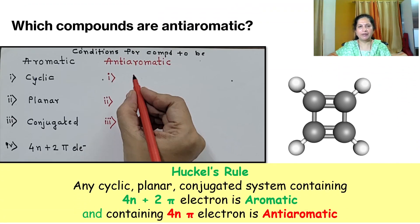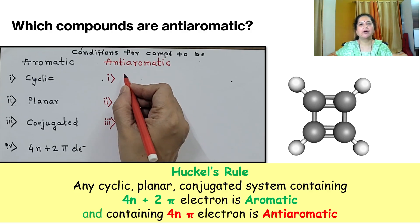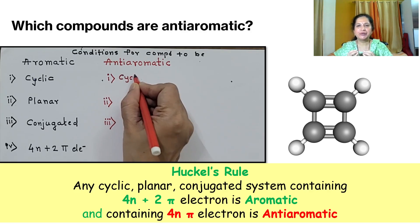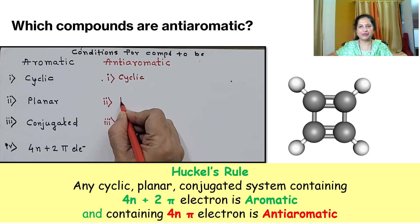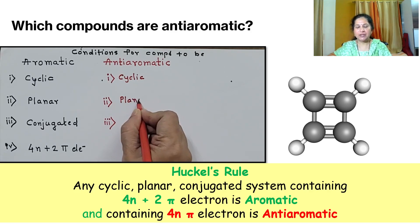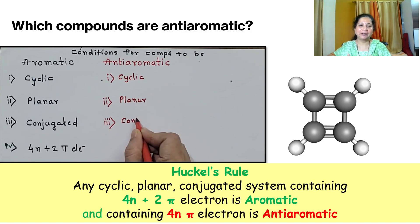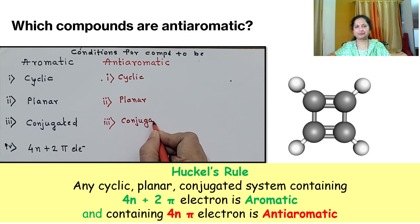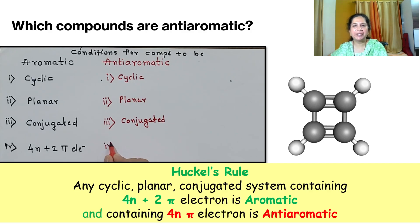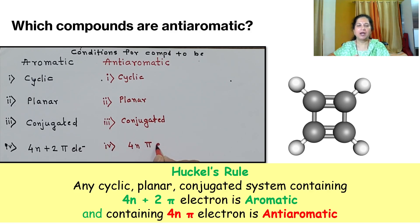Now let's check when to call a particular compound as anti-aromatic. Remember, for any compound to be aromatic or anti-aromatic, it should satisfy the first three conditions. Now, if such a cyclic planar conjugated compound contains 4n pi electrons, we will call the compound anti-aromatic.